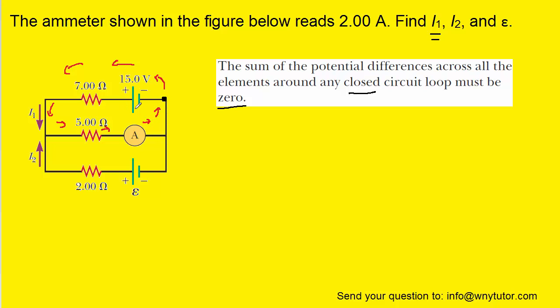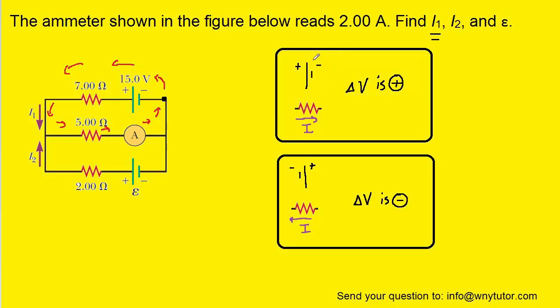For example, we encounter the 15-volt battery, the 7-ohm resistor, the 5-ohm resistor, as well as the ammeter. And as we encounter these elements, we have to keep a couple of things in mind. As you move your way through the loop, if you encounter a battery and you're traveling from the negative terminal to the positive terminal, then your ΔV value is going to be positive. And we will see in a moment exactly what that means.